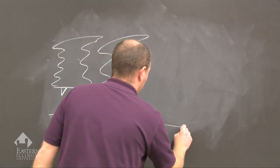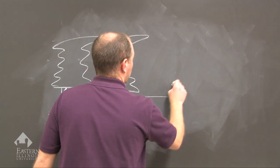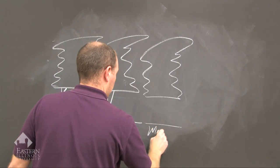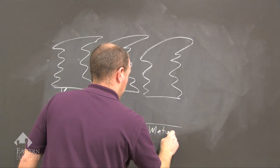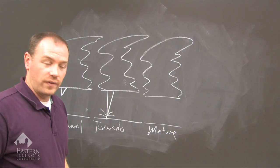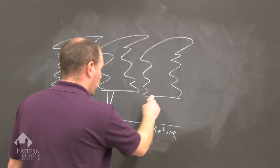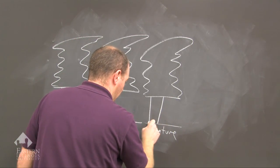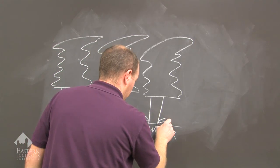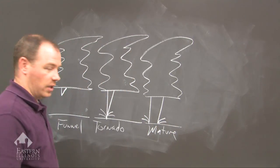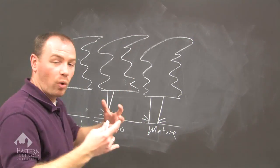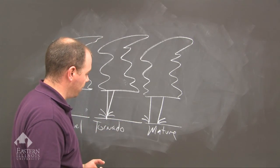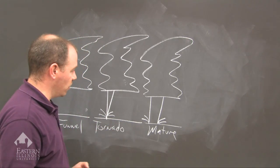The third stage is the mature stage of tornado development. Here the tornado becomes much wider and stronger, and so there is much more destruction at this particular stage.